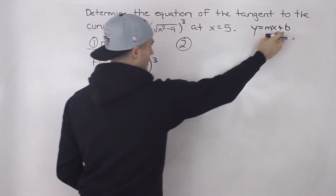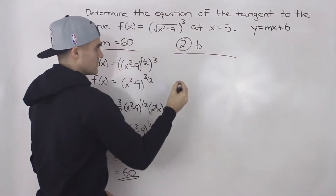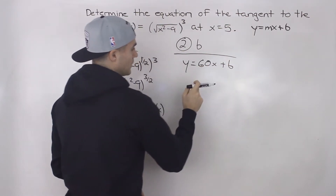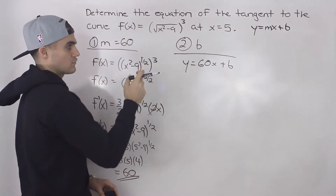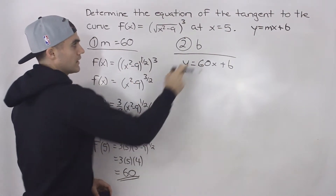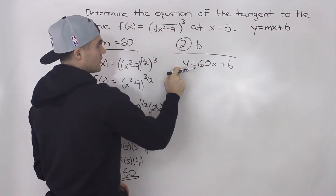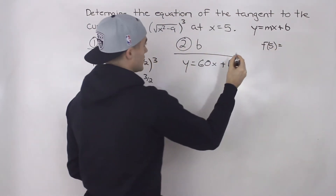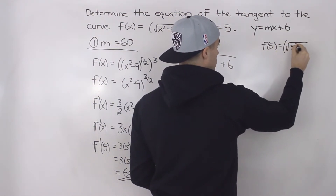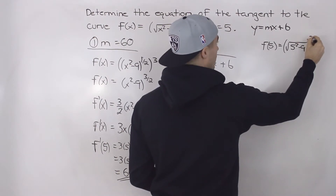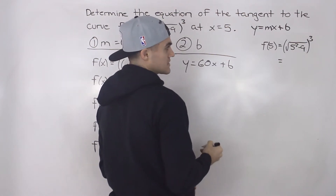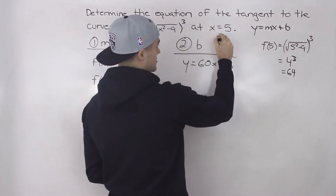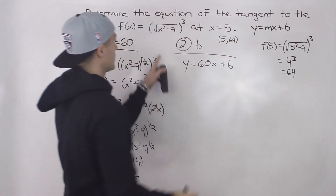The last step is to find the b value. We plug in the slope: y equals 60x plus b. Then we plug in the point on the function. At x equals 5, we need the y value from the original function: f(5) equals the square root of 5 squared minus 9, all to the power of 3. That's the square root of 16 cubed, which is 4 cubed, equal to 64. So we're finding the tangent at the point (5, 64).